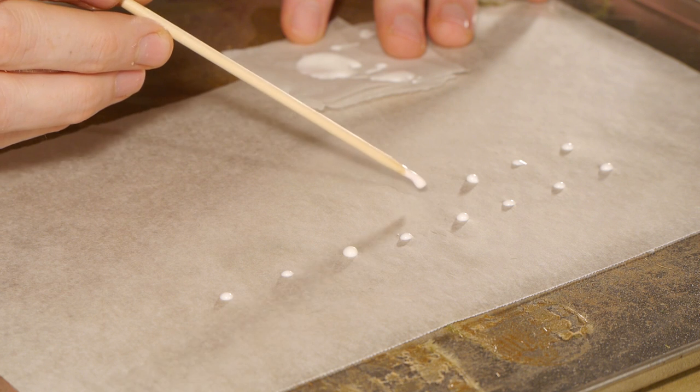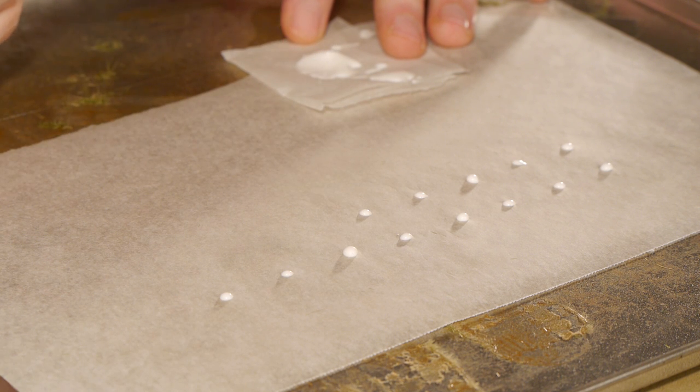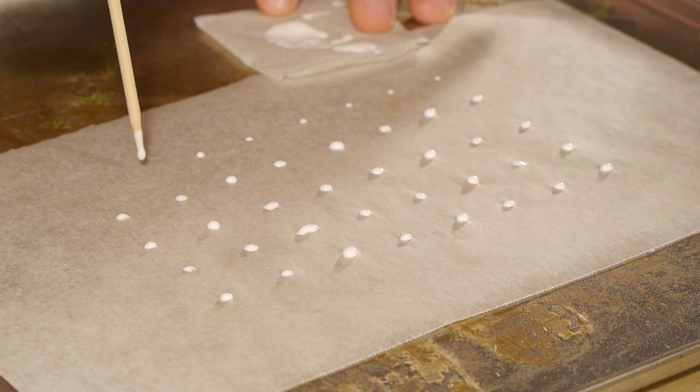The spots of glue can range in any size to your liking, but for flowering grass tufts I'm going to stick to the smaller spots of glue. I'm simply using a BBQ skewer to apply the glue to the baking paper.